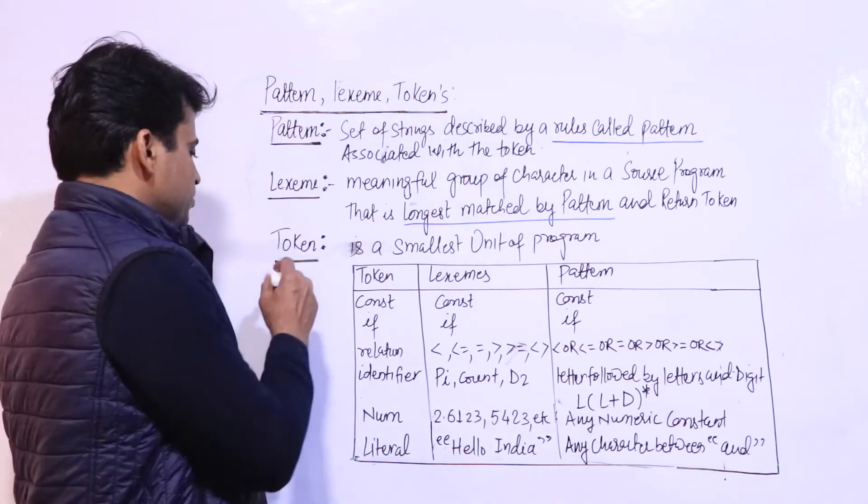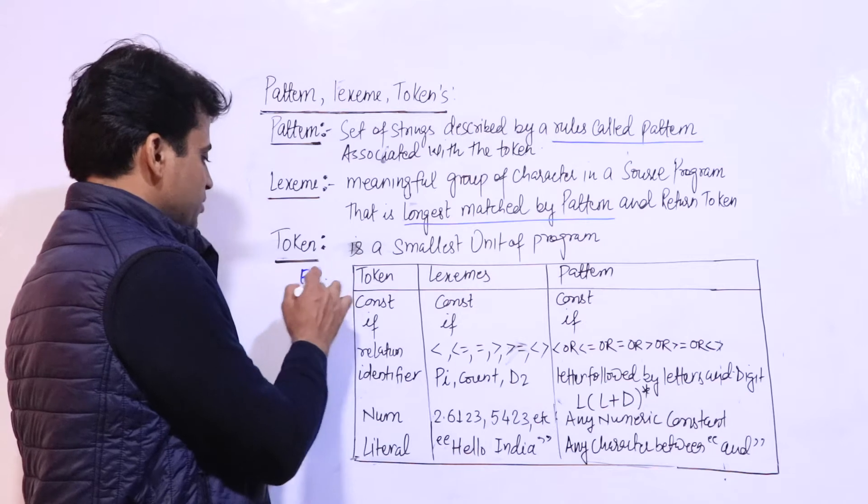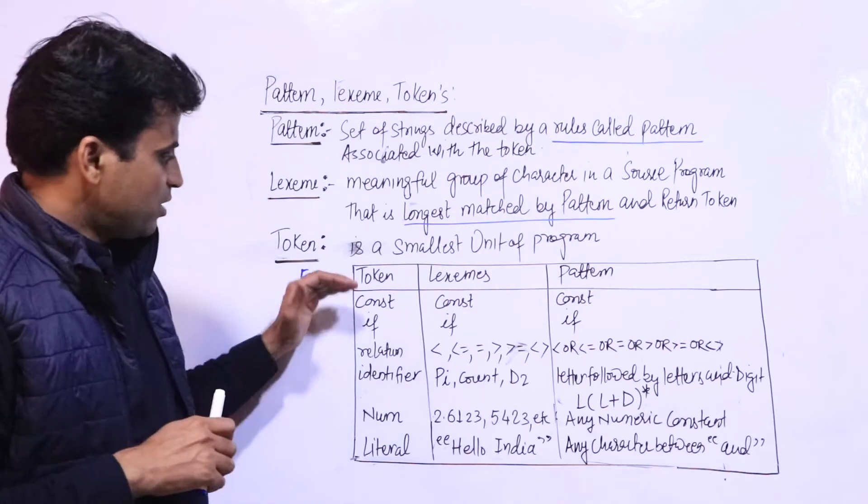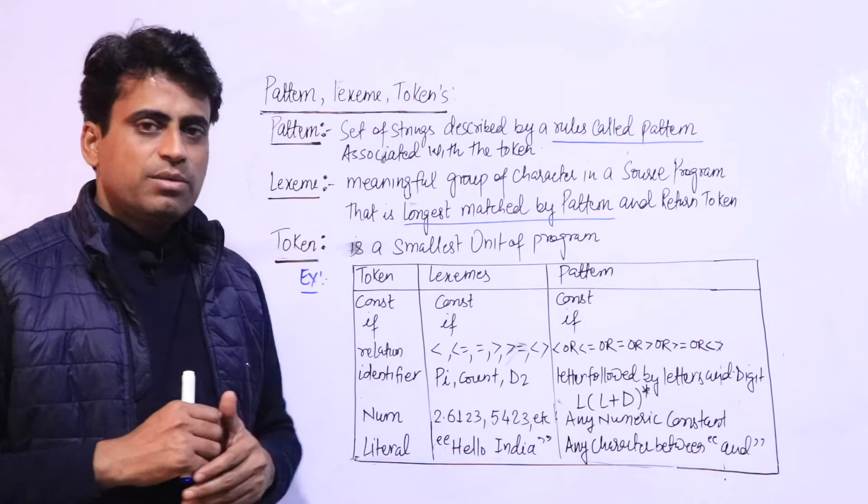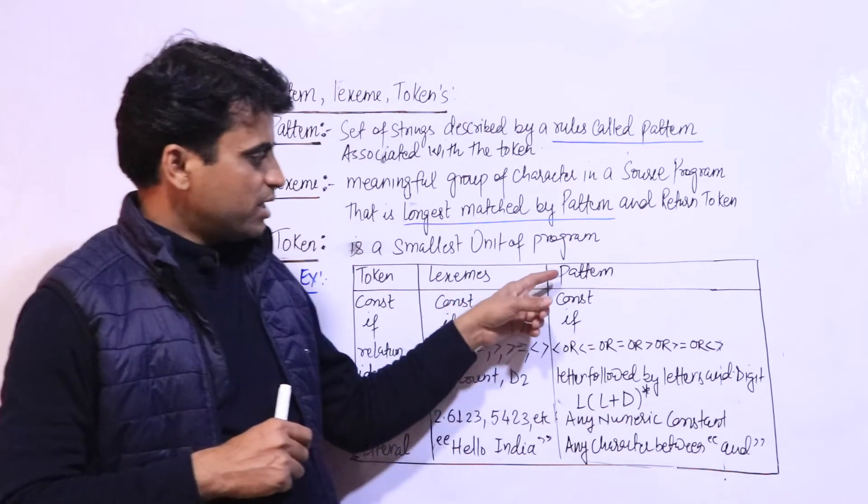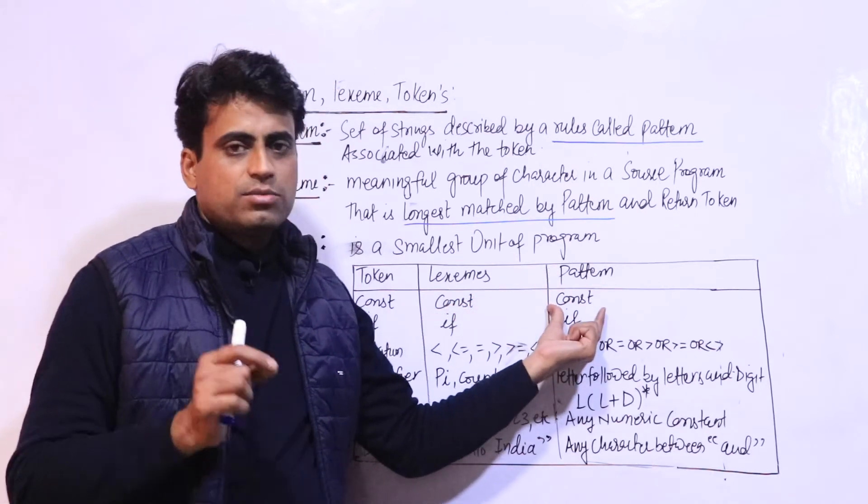Let's see this example. I have this table with some examples. Token, lexeme and pattern. Pattern, as I said, what are rules?